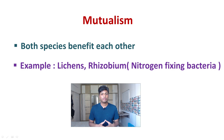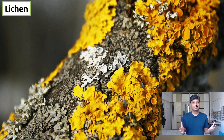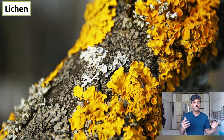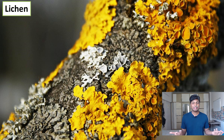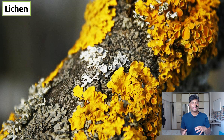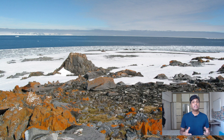There are many other examples of mutualism. One very common example is lichens. Lichens are a combination of algae and fungi living together in close relationship. The algae benefit the fungi by giving them shelter and providing nourishment through photosynthesis, while the fungi benefit the algae by helping in absorption of nutrients. Lichens grow on the bark of trees and in colder regions like Antarctica.